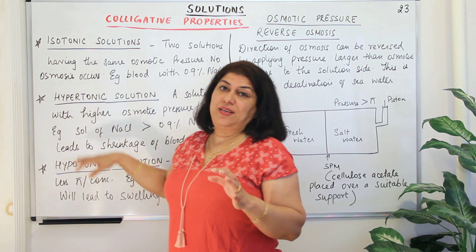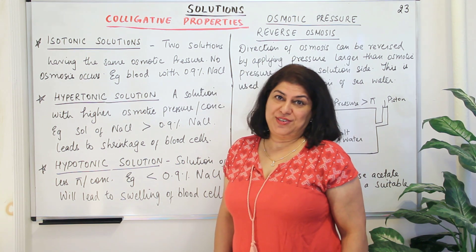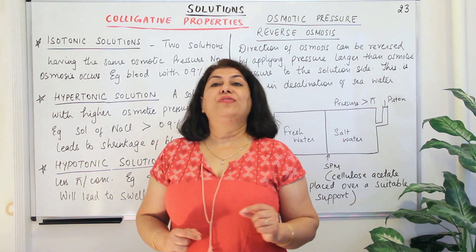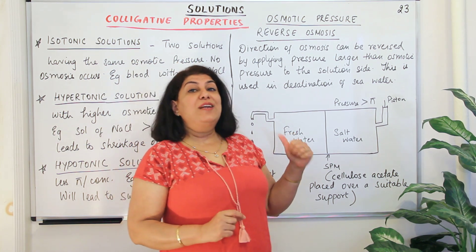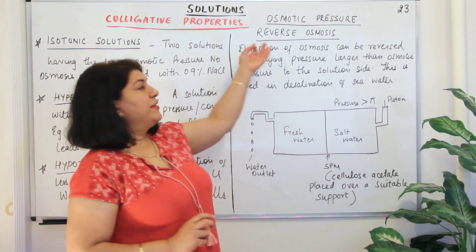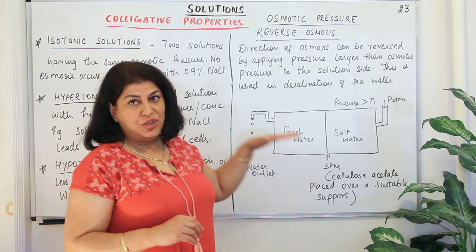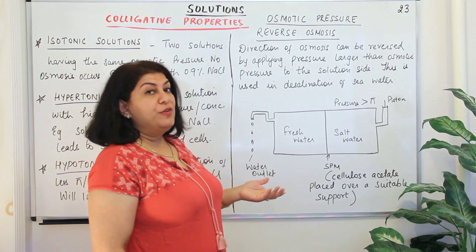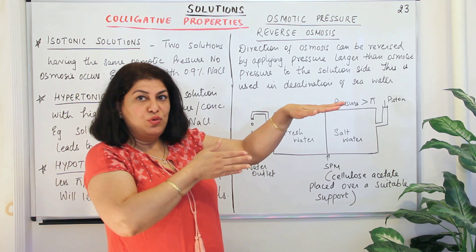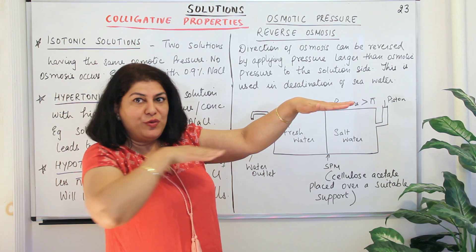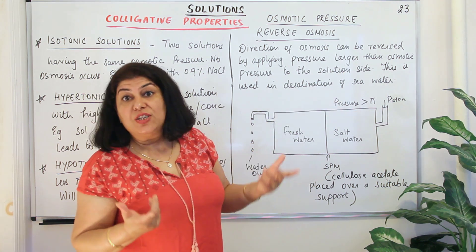So those are the different categories of solutions based on osmotic pressure: isotonic, hypotonic, and hypertonic solutions. Now let us come to an important application of this knowledge — but first, let us understand what reverse osmosis is. The direction of osmosis is from lower concentration to higher concentration. Osmotic pressure is the minimum pressure applied in the opposite direction — the direction towards which solvent molecules are moving — needed to stop osmosis.